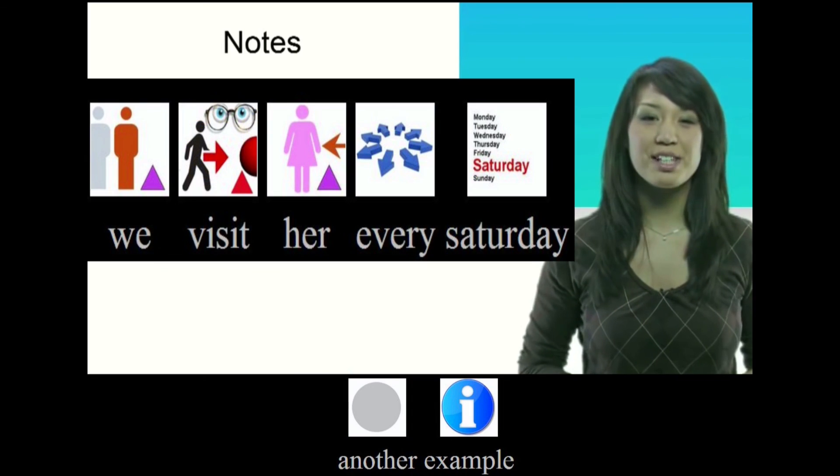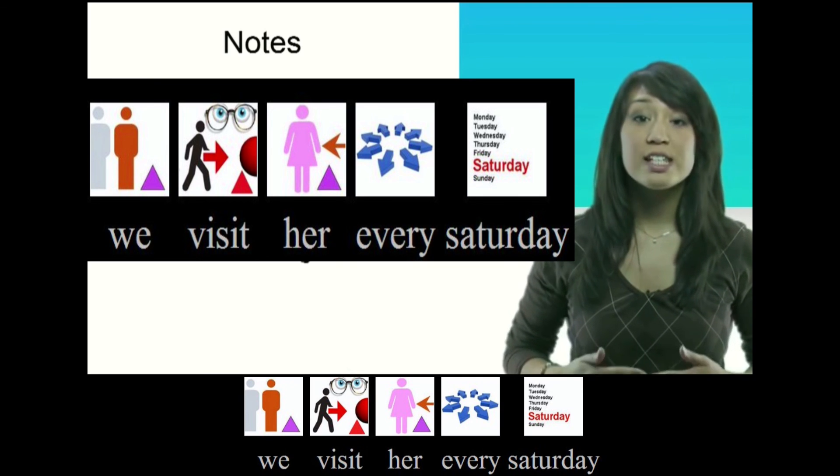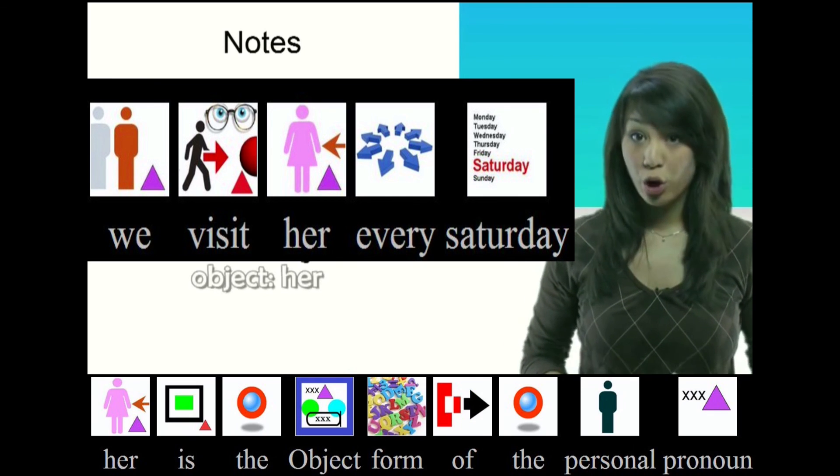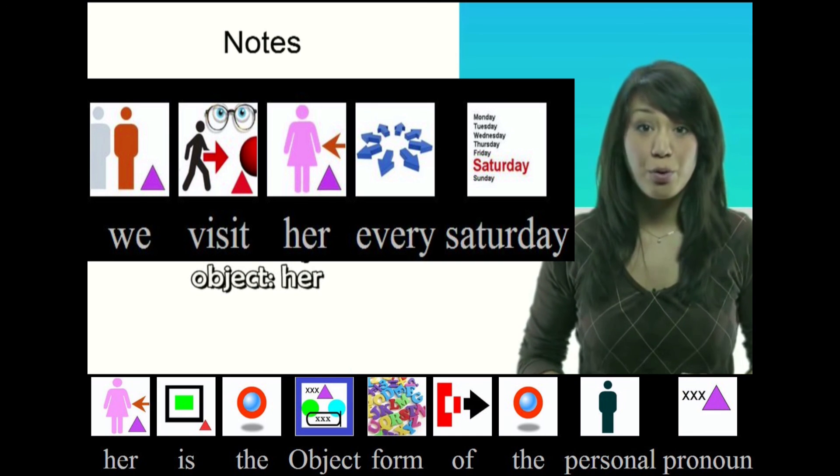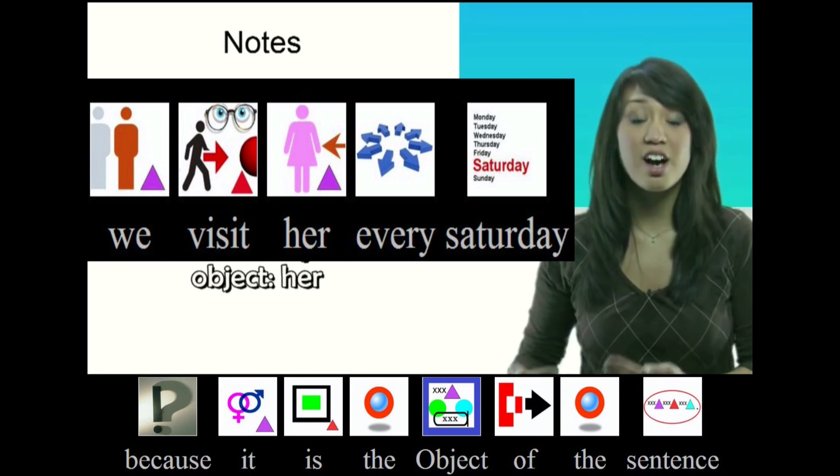Another example, we visit her every Saturday. Her is the object form of the personal pronoun because it is the object of the sentence.